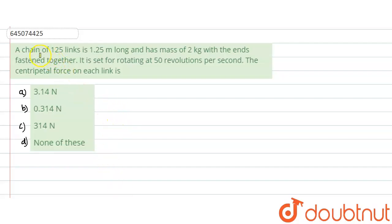In this question, there is a chain of 125 links that is 1.25 meters long and has a mass of 2 kg with the ends fastened together. Now it is set for rotating at 50 revolutions per second.